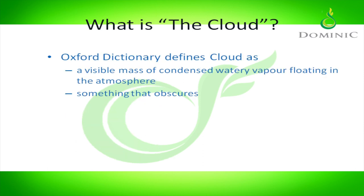The Oxford dictionary defines cloud as a visible mass of condensed watery vapor floating in the atmosphere. Most of us when we hear the word cloud think of something white and fluffy. But the definition that's maybe a little more relevant for cloud computing is something that obscures - not in a bad way, but something that obscures and hides from us unnecessary details.